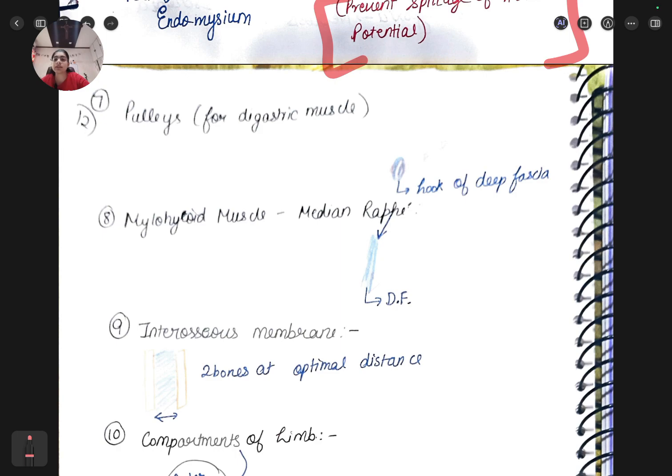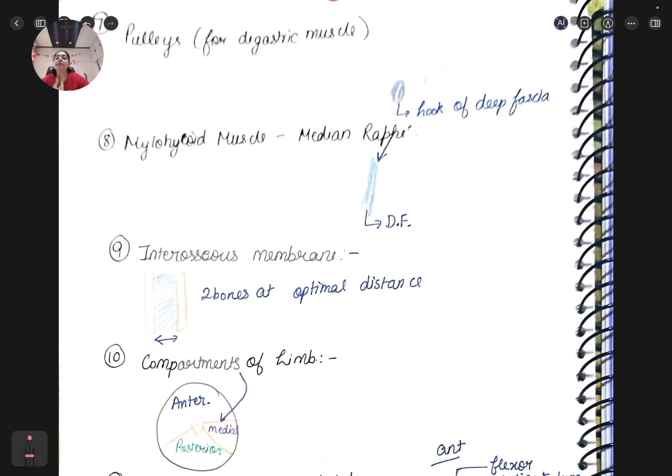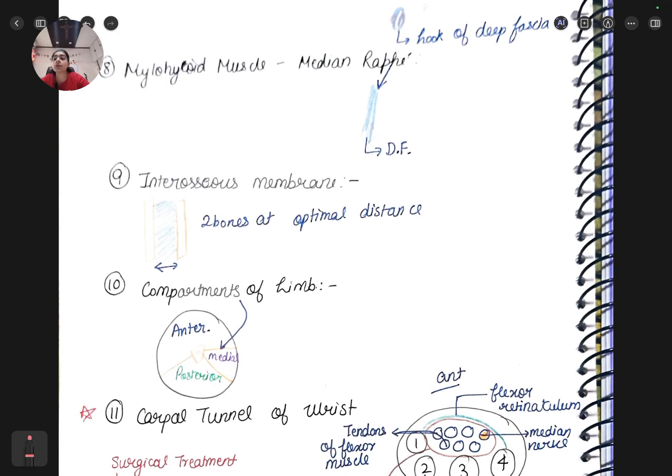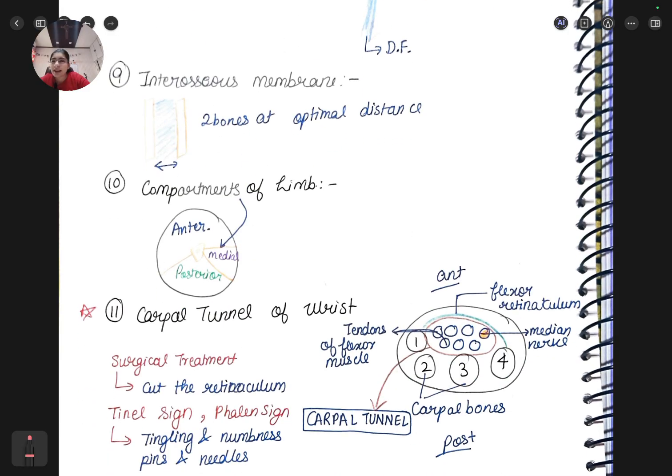Pulleys for digastric muscle in our neck, mylohyoid muscle. Interosseous membrane between the two bones - here are the bones radius and ulna. Between the two bones there is a membrane known as interosseous membrane. At the starting you just need to be curious about everything, try to grasp what are the new things, where are they, what is the function, why it is there. Find answers to these questions, you will get interested in the subject.